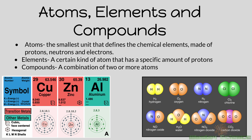Atoms are the smallest unit that defines the chemical elements. These are made up of protons, neutrons, and electrons — you talked about them last year. You can look at the diagram down here and see some examples: this is a copper atom, this is a zinc atom, and this is an aluminum atom. Each of these are different elements.